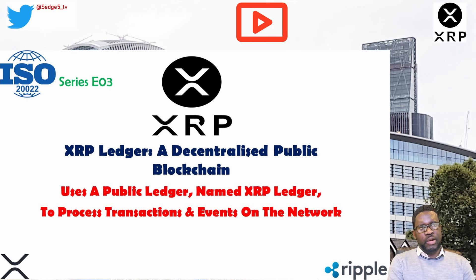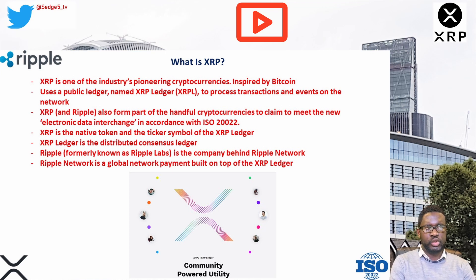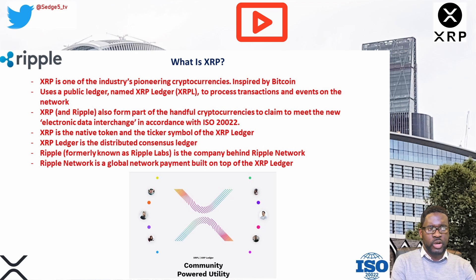Launched in 2012, XRP is one of the industry's pioneering cryptocurrencies. Inspired by Bitcoin, it uses a public ledger named the XRP Ledger to process transactions and events on the network. Love it or love it, XRP is one of the very few cryptocurrencies with actual real-world use cases that are already being delivered. In addition, XRP and Ripple are also part of a handful of cryptocurrencies claiming to meet the new electronic data interchange standard in accordance with ISO 20022.